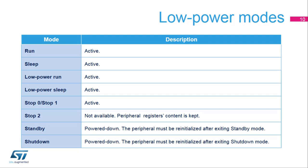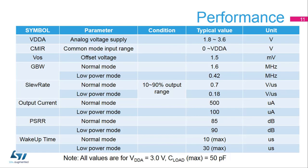In stop 2 mode, the op-amp is not available, but its register contents are kept. In standby or shutdown modes, the op-amp is powered down and must be re-initialized for use if returning to one of the higher-powered modes.